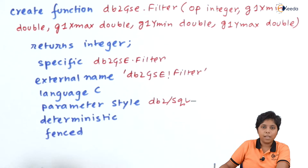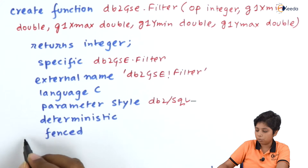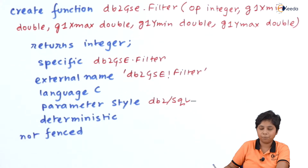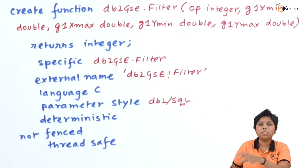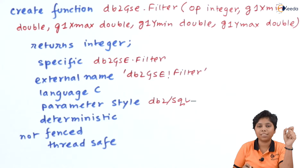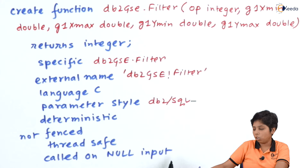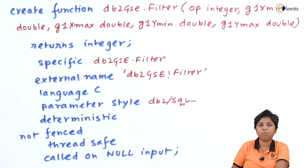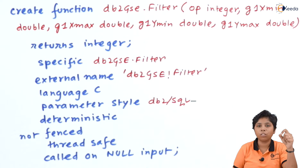Using the keyword 'fenced' means the function is bounded and cannot go outside its boundary of values. Using 'not fenced' allows the function to go outside that boundary. 'Thread safe' means the function can safely execute on different threads concurrently if processing is divided across threads. It can also be called on null input, meaning the function accepts null input. This definition provides the prototype of what the function can do, not the actual implementation.